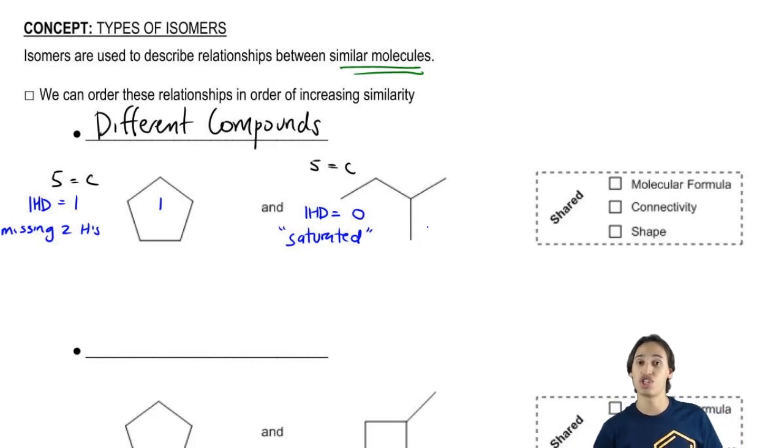So when we look at the relationship between these, what I want to do is I want to use this box to figure out what is shared between the two molecules. So is the Molecular Formula shared? Actually, no because – think about it – they have the same amount of carbons but they have different amounts of hydrogens so they're different compounds. Is the connectivity the same? No, because they're different atoms and the shape is also not the same.